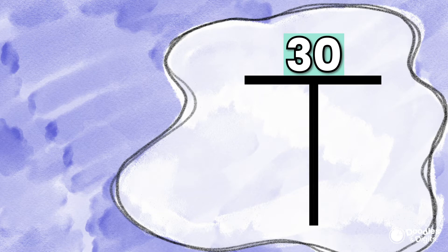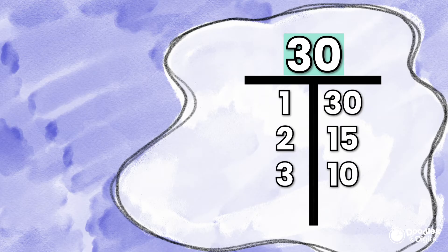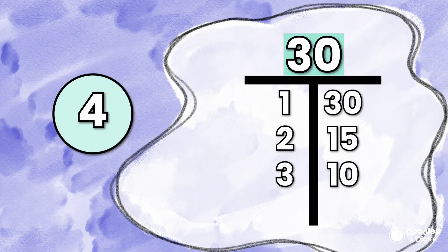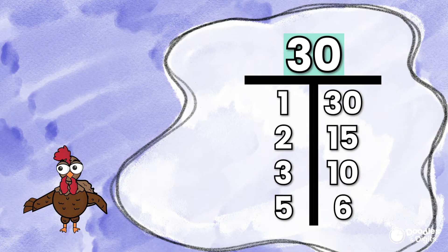Remember, 1 is a factor of all numbers. So 1 times 30 equals 30. Let's go on to 2. 2 times what equals 30? 15. 3 times 10 equals 30. So they're both factors. Alright, let's think about the number 4. Hmm, can 4 evenly go into the number 30? No, so 4 is not a factor. How about 5? Yes, 5 times 6 equals 30.